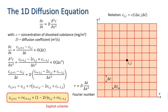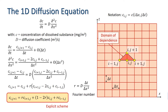Looking at the points on the grid used in this equation: at point (i, j+1), we use points (i−1, j), (i, j), and (i+1, j), giving us a triangular domain of dependence as shown here.